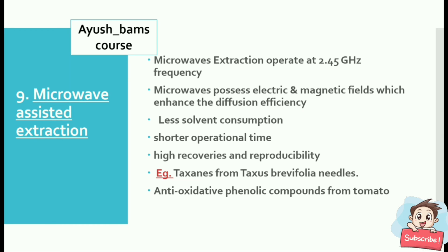The ninth method is microwave assisted extraction. Microwaves operate at 2.45 GHz frequency and possess electric and magnetic fields which enhance diffusion efficiency. Advantages include less solvent consumption, shorter operational time, and high recovery and reproducibility. Examples include taxanes from Taxus brevifolia needles and antioxidative phenolic components from tomato.